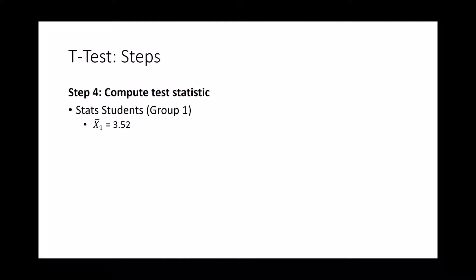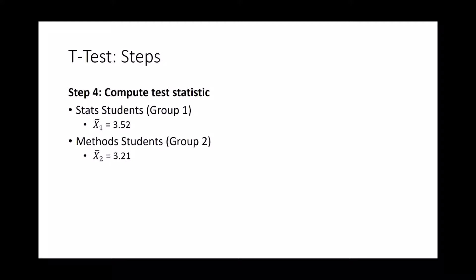So again, we have our stats students with a mean of 3.52 and methods students with a mean of 3.21. For step 4a, we compute the observed deviation between the means — simply the difference between our two means. This goes in the numerator of our t-test formula: x-bar sub 1 minus x-bar sub 2. Plugging in 3.52 and 3.21, we get a deviation score of 0.31. Save this value because we'll use it in a moment.